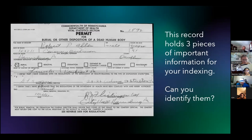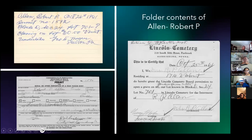The third document is one generated by the State Department of Health — it is a permit for burial. This record holds three pieces of important information for you to index. Your three pieces of important information are: the name of the deceased, Robert P. Allen; his date of death, 10-23-61; and his place of death, Harrisburg, PA.